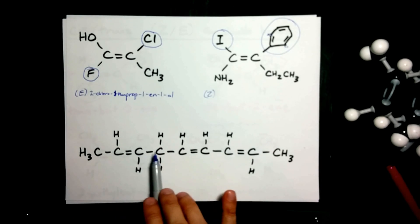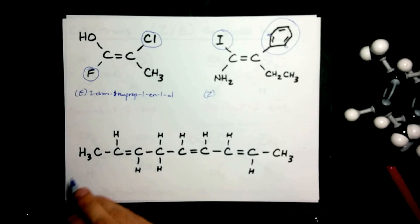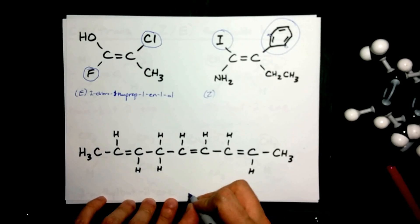Here we have one, two, three, four, five, six, seven, eight, nine carbons in a row. That makes it a non.